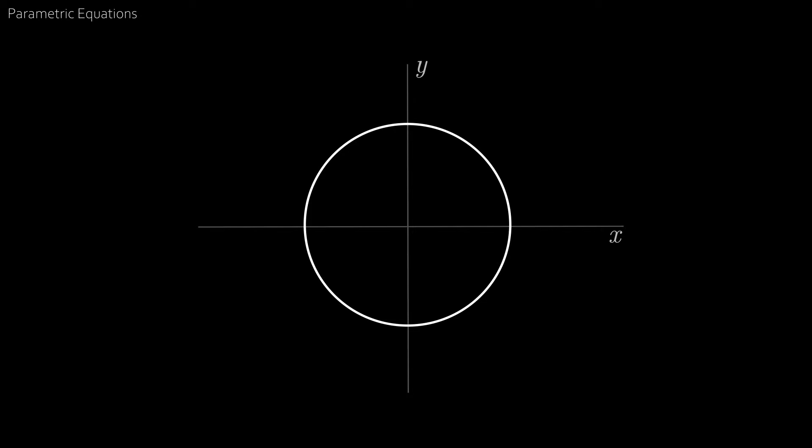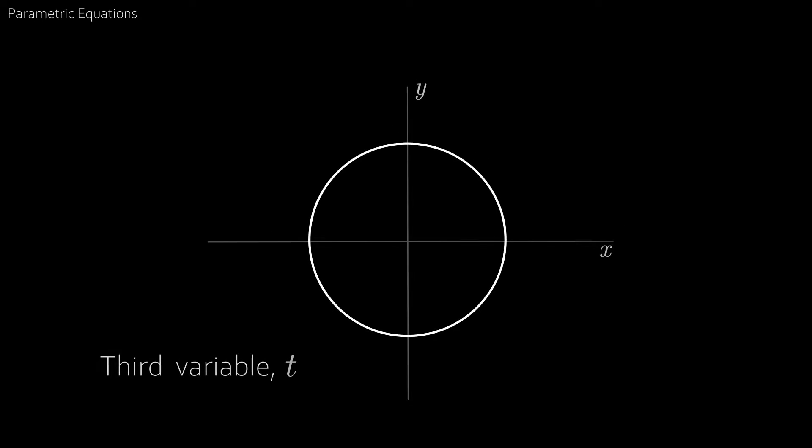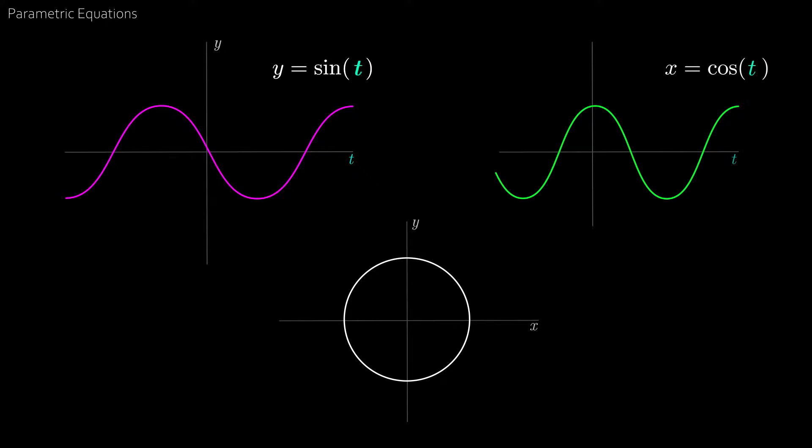Let's start with parametric equations and take the good old unit circle. Traditionally we can define this with a third variable t where the y coordinate is equal to sine t and the x coordinate is equal to cosine t. And if we plot this on a graph, we see it does indeed give us the unit circle.